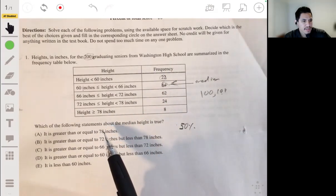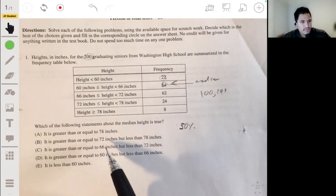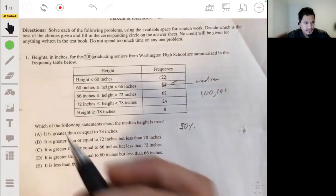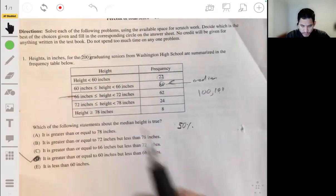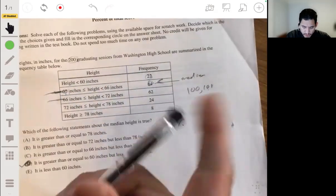So let's look which one of these would work. It's not going to be greater than 78 inches. Not greater than 72, greater than or equal to 66 but less, not that one. Greater than or equal to 60 but less than 66. So yeah, the answer would be D. Oops, it fell in that category.